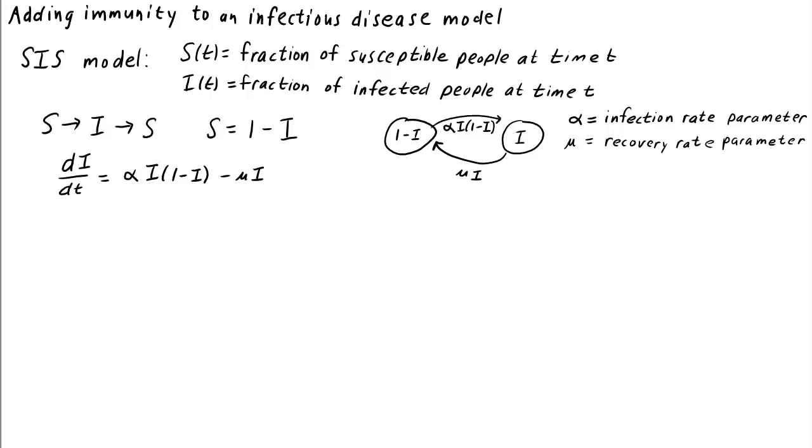We previously derived an infectious disease model without immunity. In this model, called the SIS model, the state variable s was the fraction of susceptible people at time t, and the state variable i was the fraction of infected people at time t.